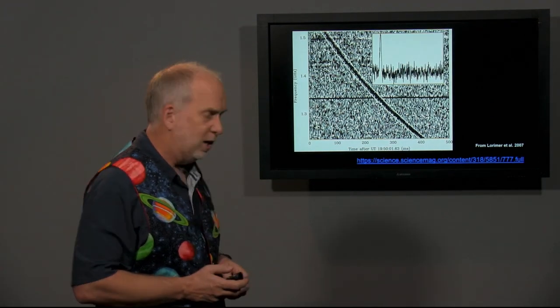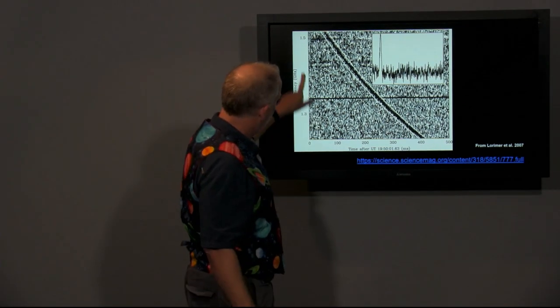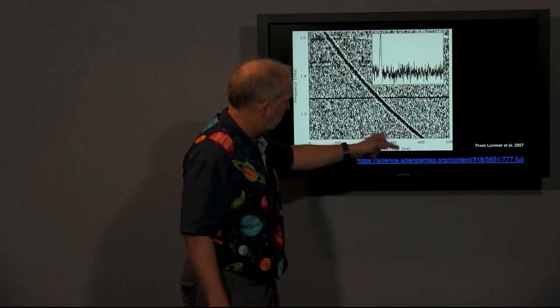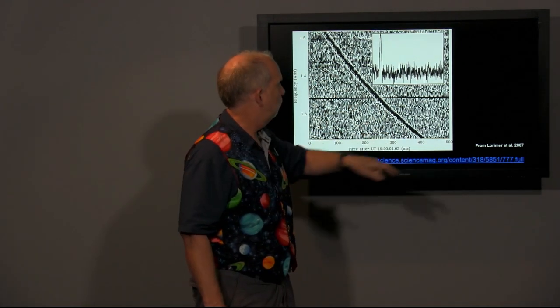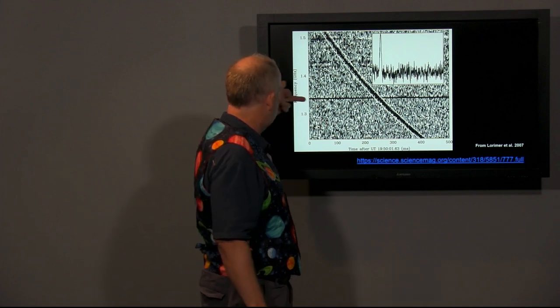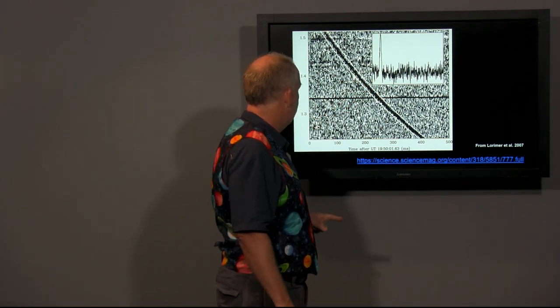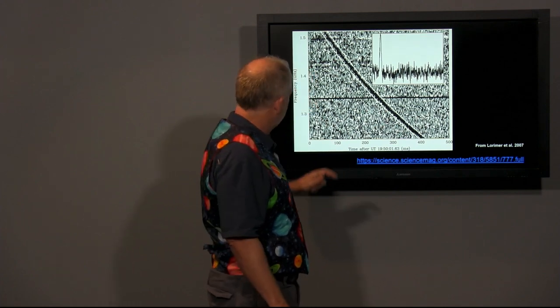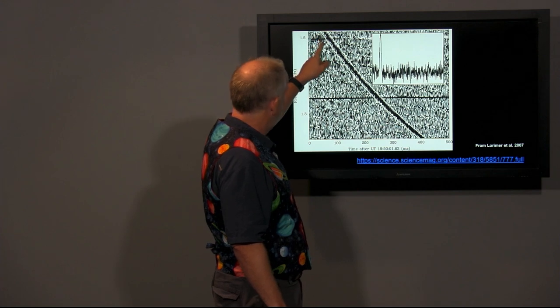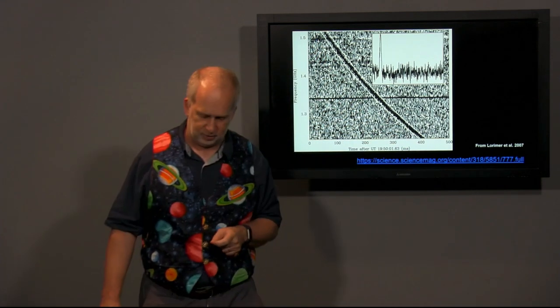And they saw a rather strange pattern. So what we've got here: this is the frequency in gigahertz and this is the time in milliseconds. What you can see is a curving sloping line. If you do a cut through it at one point like here, you see there's a very narrow spike, only lasts five or ten milliseconds. But what you can see is it happens earlier at high frequency and later and later as you get to lower and lower frequencies.